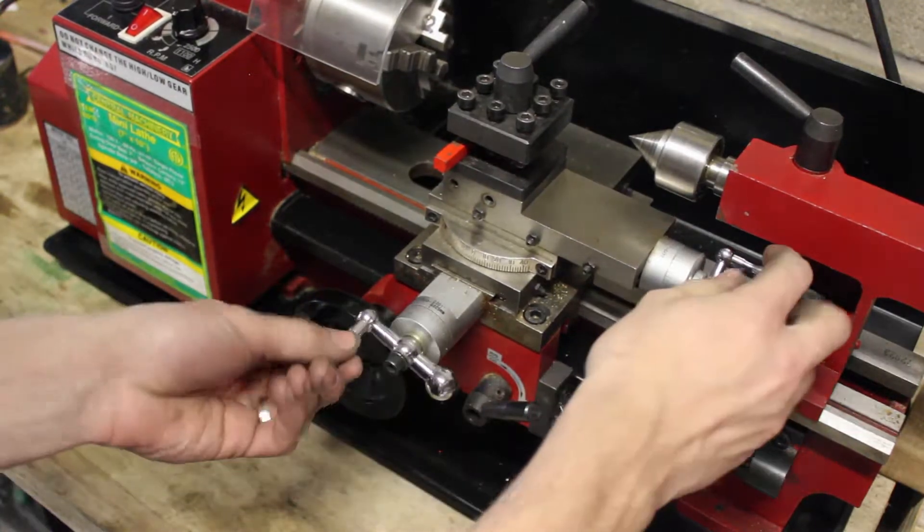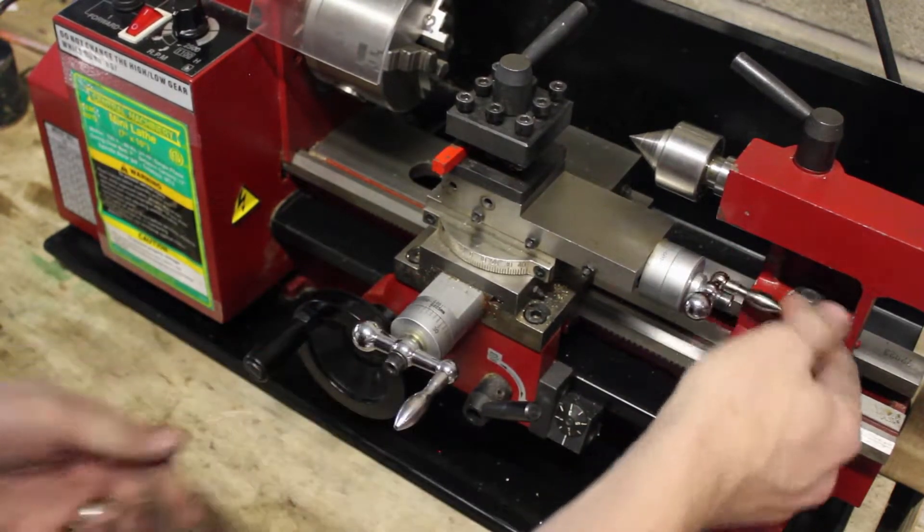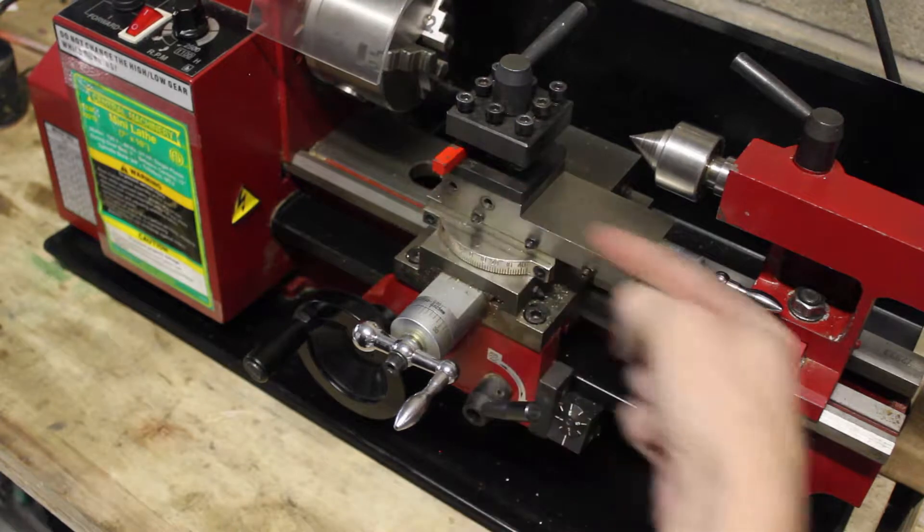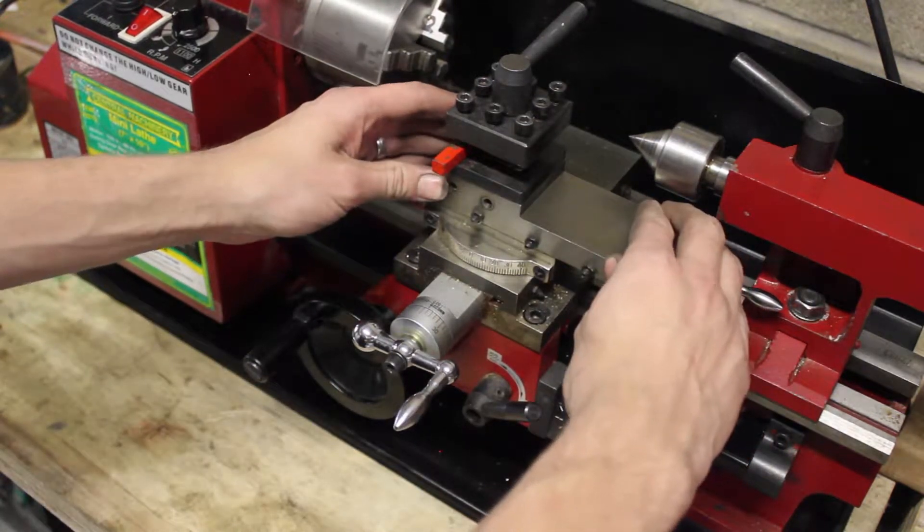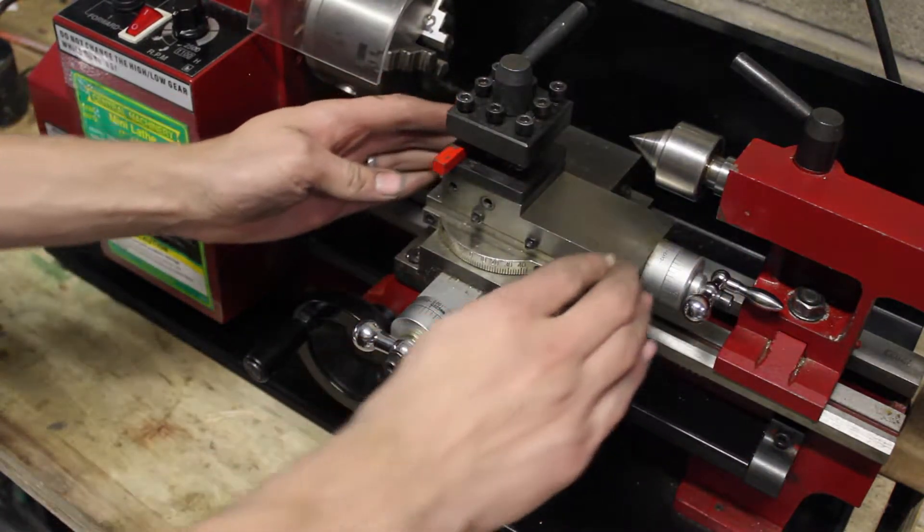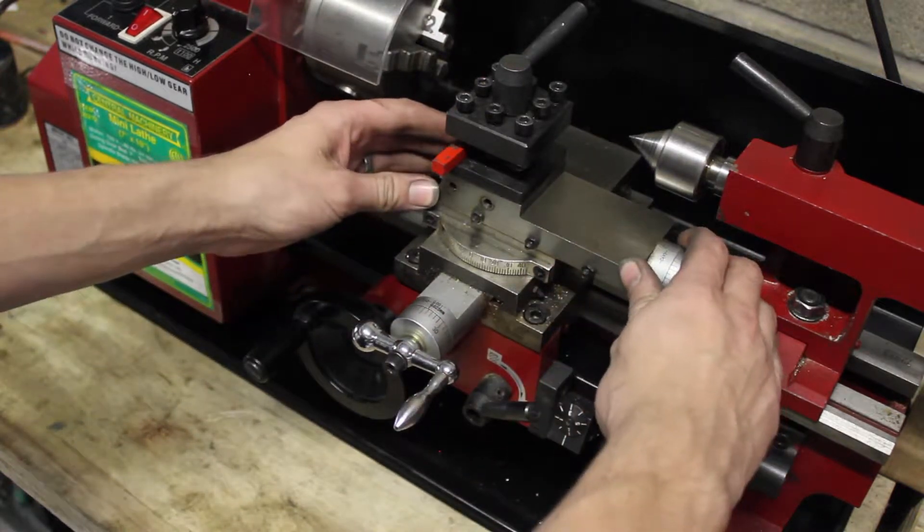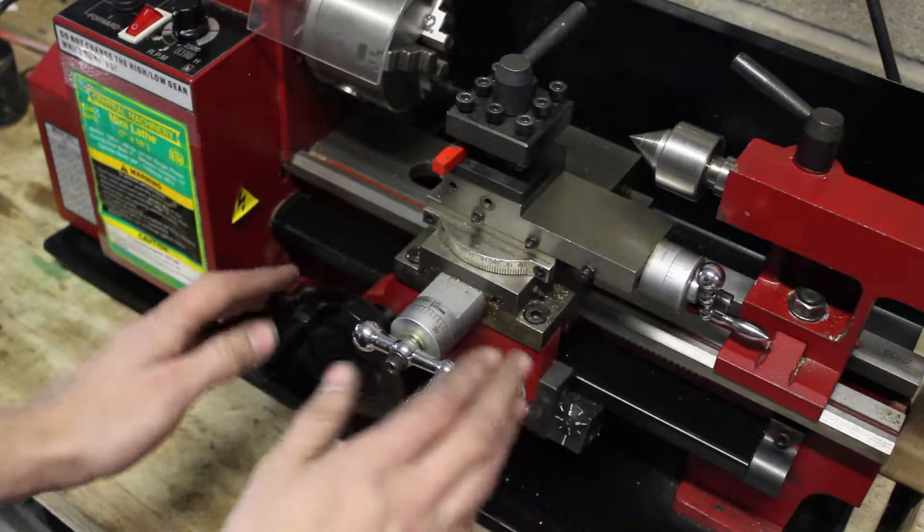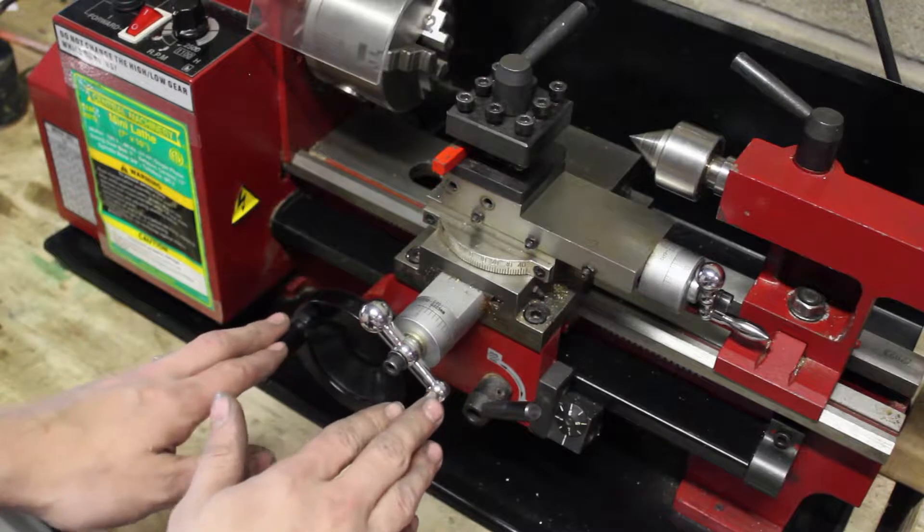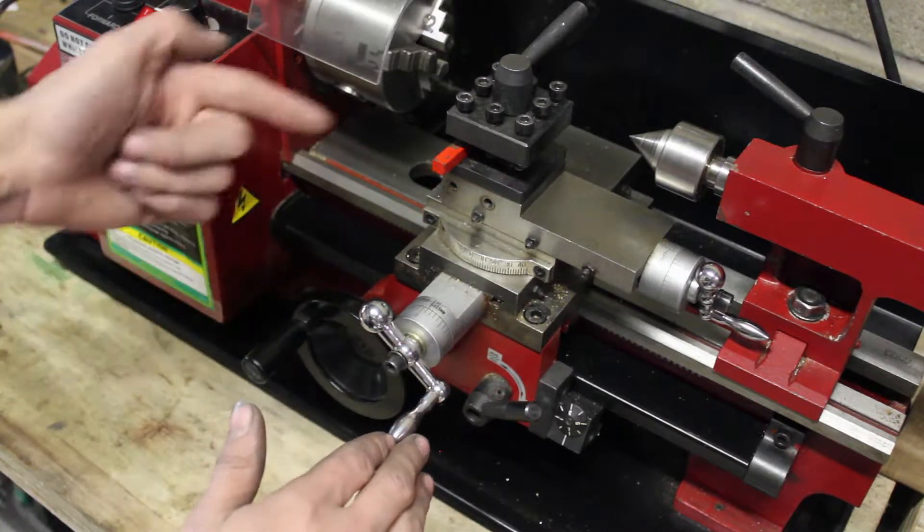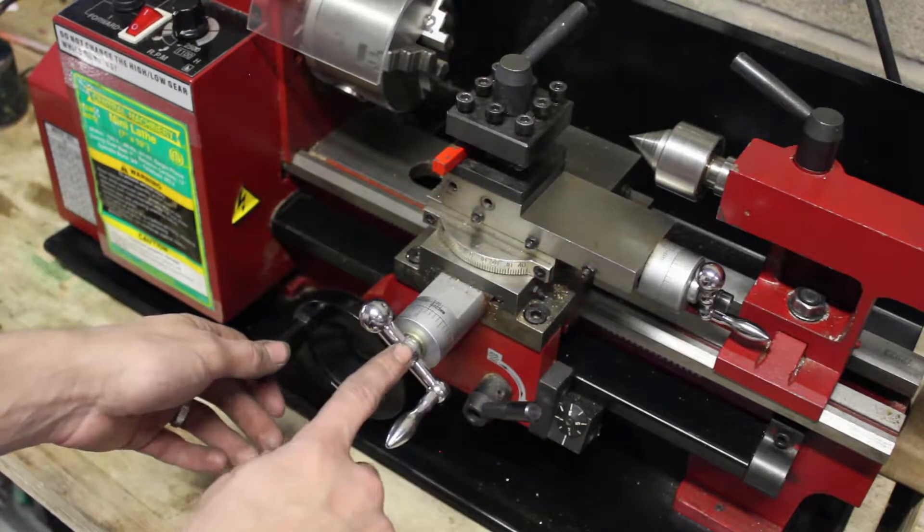And this third knob back here. Right now it's set to move in the Z axis. But this whole top part is actually able to rotate so that you can cut tapers. But most of the time if you're cutting straight things, you're going to be using this for side to side, and this knob for forward and backward.